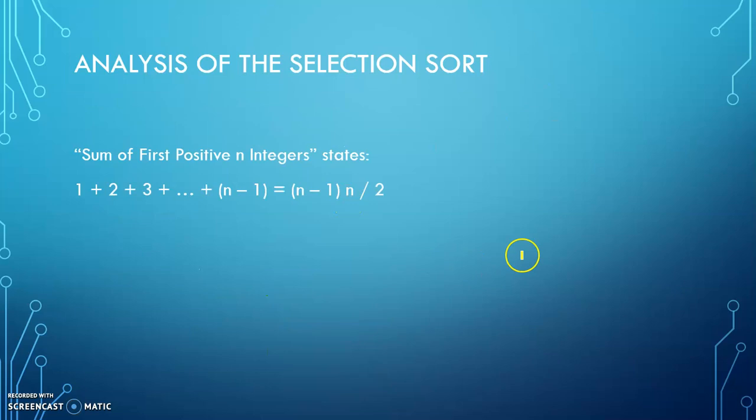Now, there is a mathematical law called the sum of first positive n integers, and here's the law. All you have to know is that it exists, and it's easy. We have this series of numbers, the first positive numbers going up to n minus 1, however big the series is, is equal to this formula here, n minus 1 times n divided by 2. So let's try it briefly.